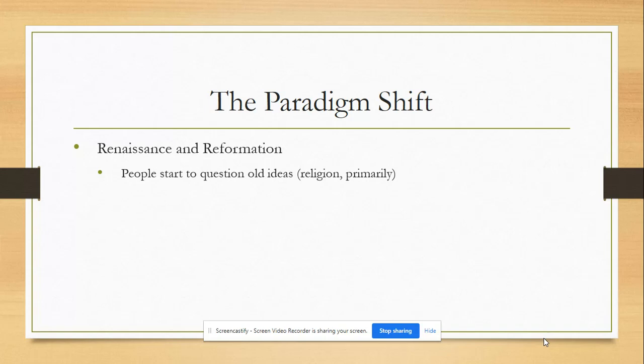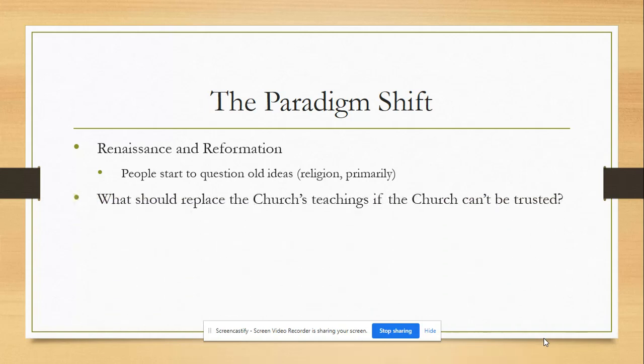We talk about a lot of these developments in the historical field as if they are revolutions, but in reality they're evolutions — movements that occur because of what came before. The Renaissance and Reformation are inextricably linked. The Scientific Revolution, called a revolution, is really evolutionary based on that questioning begun during the Renaissance and Reformation. The Enlightenment fits into that as well.